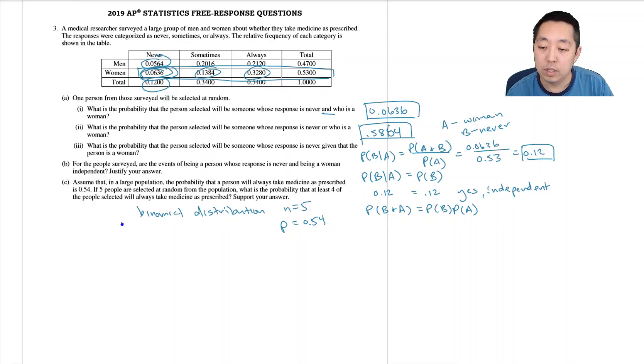There's a fixed number of trials, five, and the probability of success which is them taking the medicine is 0.54. So this I can rewrite as probability that X is greater than or equal to four, which is really the probability that we had exactly four or we had exactly five. This would be by binomial formula: 5 choose 4, p to the fourth, which would be 0.54 to the fourth times 0.46, plus 5 choose 5, 0.54 to the fifth times 0.46 to the zero.